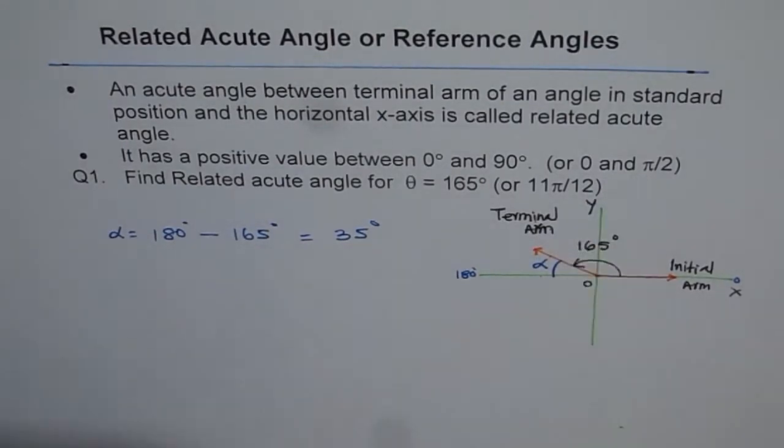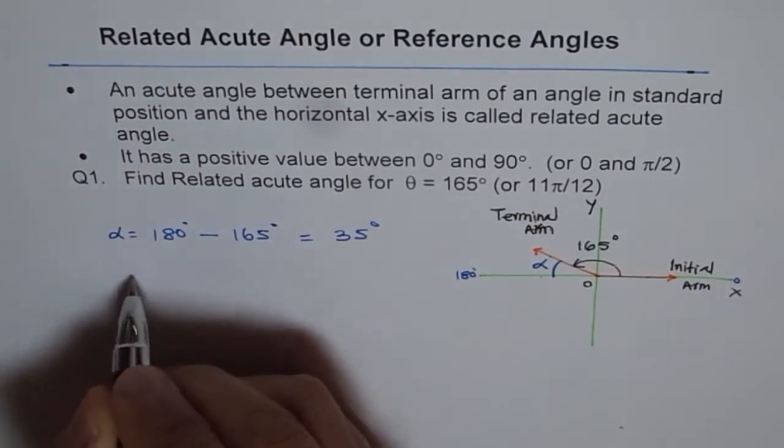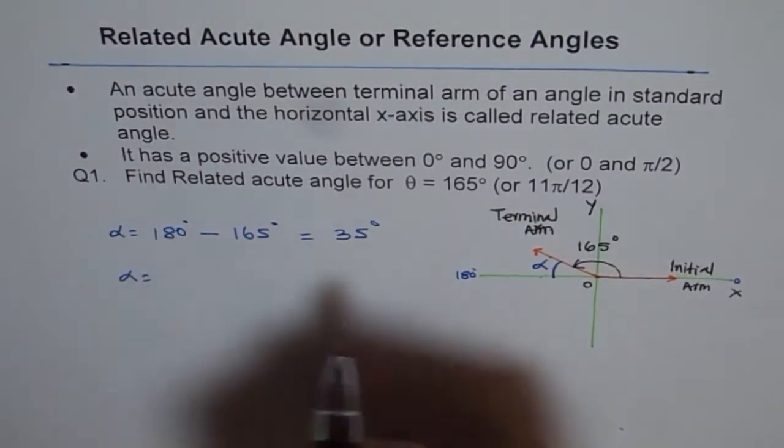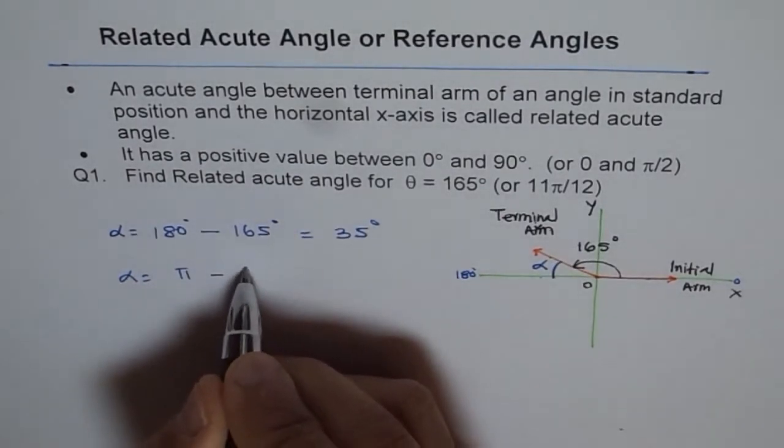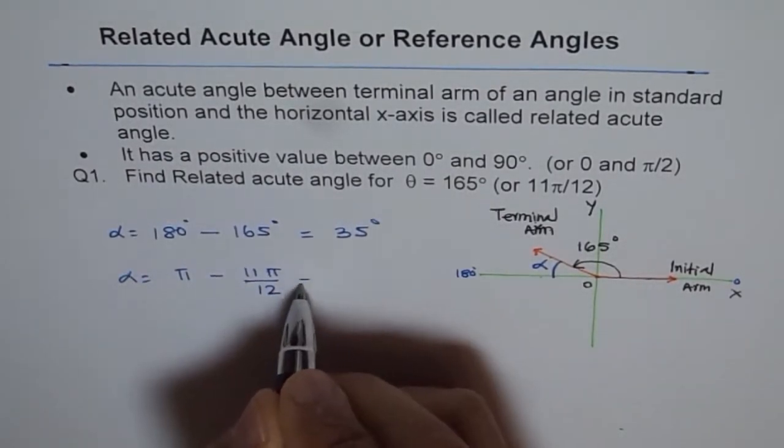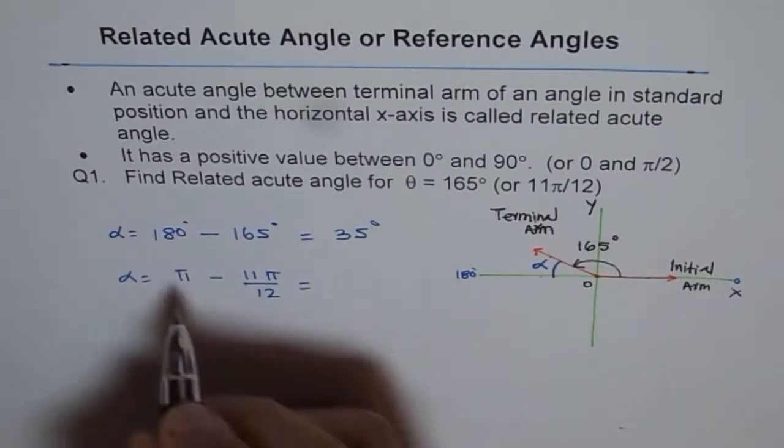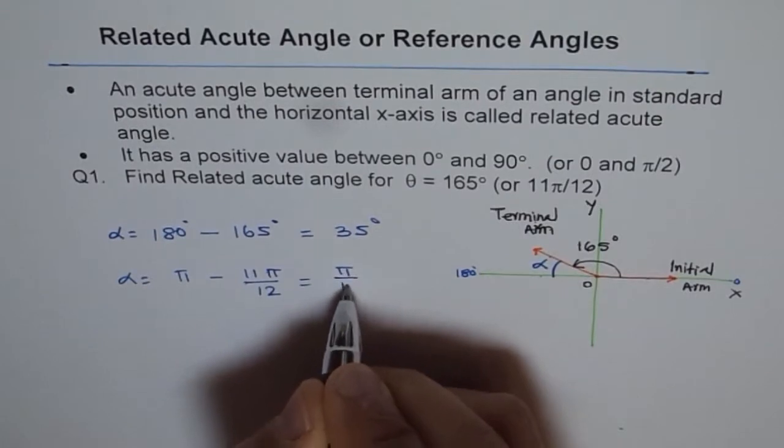If you are doing in radians, then we are worried about 11π/12. So α equals to, this total is π. π - 11π/12, which is equal to 12π/12 - 11π/12. Is that okay?